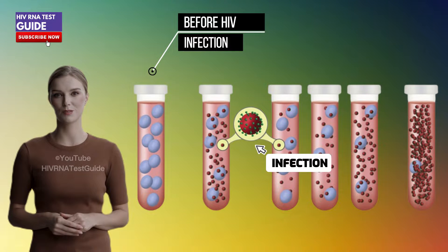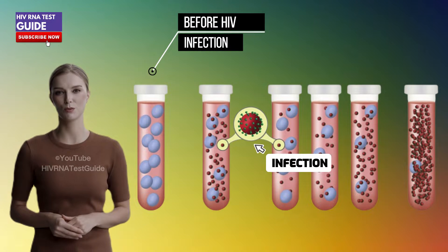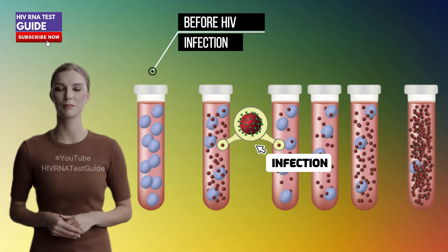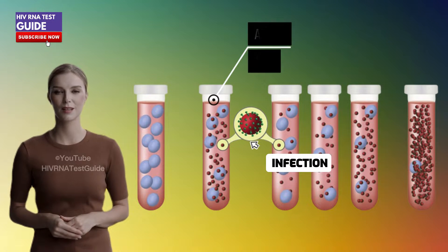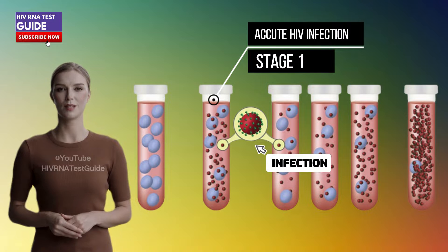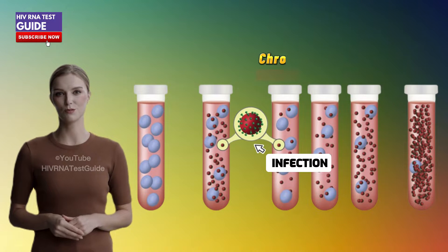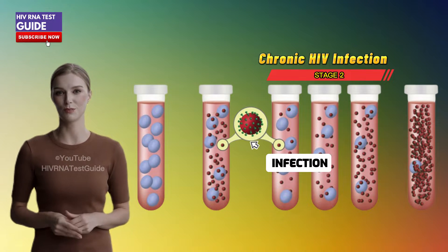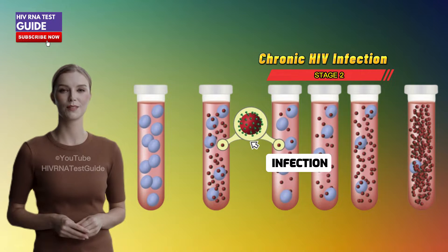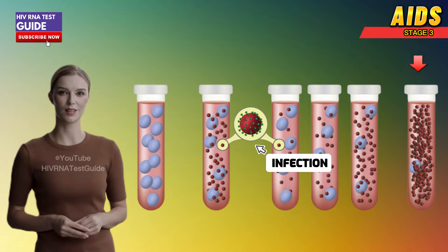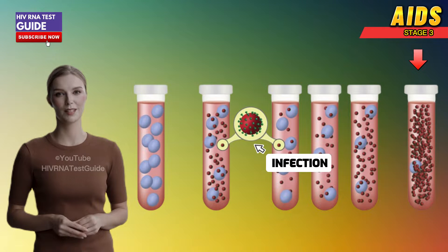One of the main goals of antiretroviral therapy, or ART, is to reduce a person's viral load to an undetectable level. An undetectable viral load means that the level of HIV in the blood is too low to be detected by a viral load test. People with HIV who maintain an undetectable viral load have effectively no risk of transmitting HIV to their HIV-negative partner through sex.